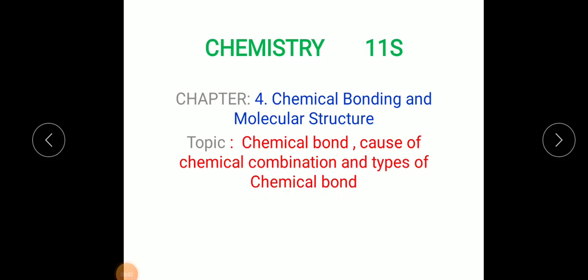Hello class 11, today we are going to start a new chapter — our fourth chapter: chemical bonding and molecular structure. You all have studied this chapter in class 10, and now we will study it again in class 11. Today's topic will cover what a chemical bond is, what the cause of chemical combination is, and what the types of chemical bonds are.